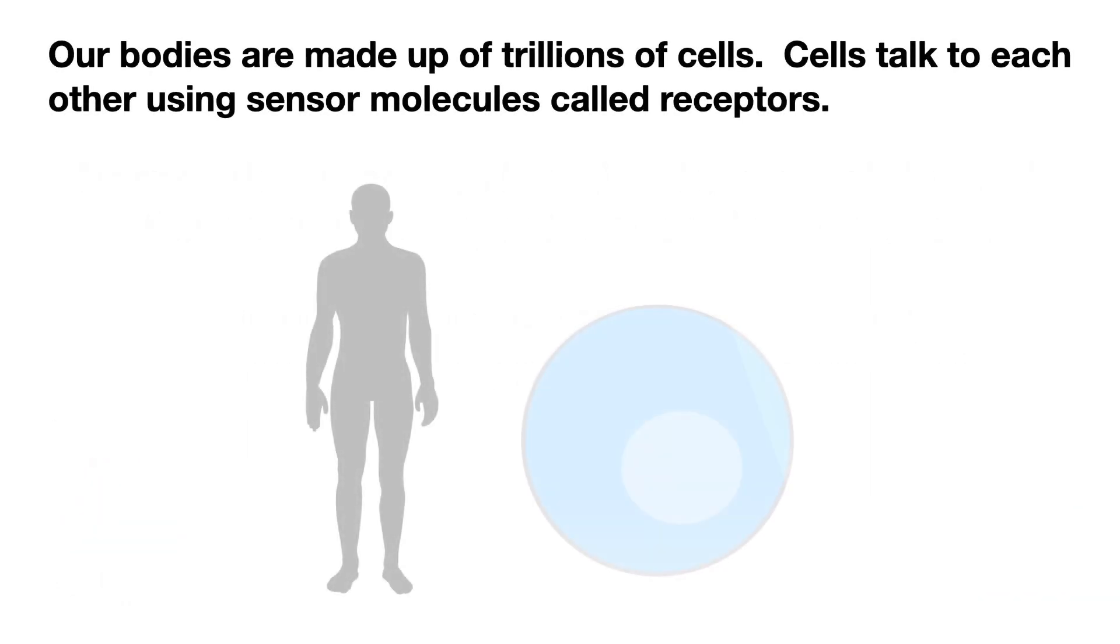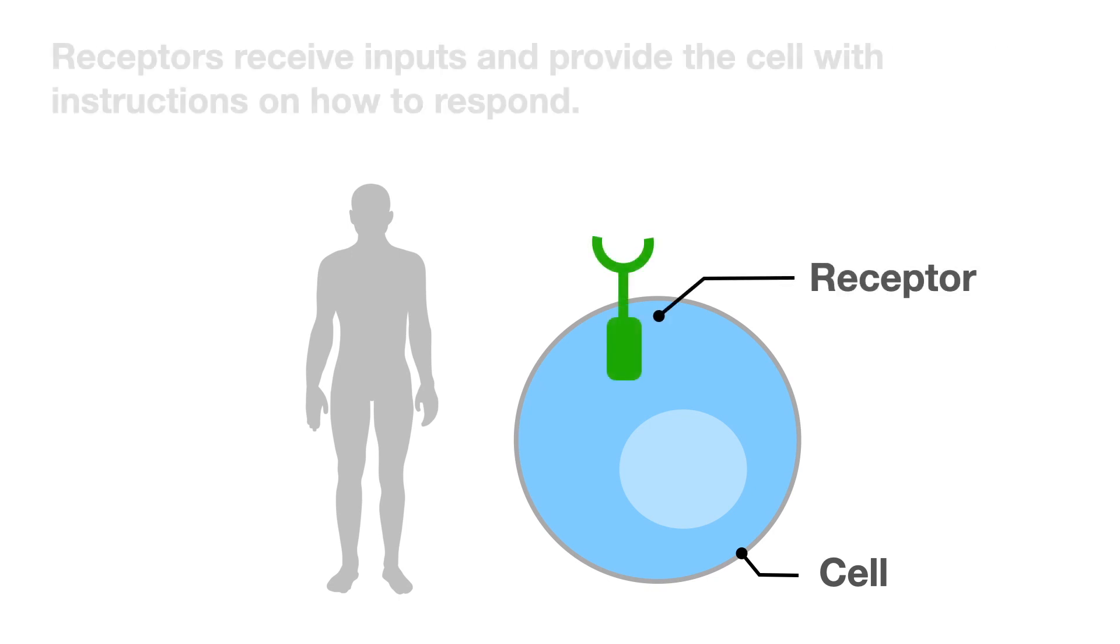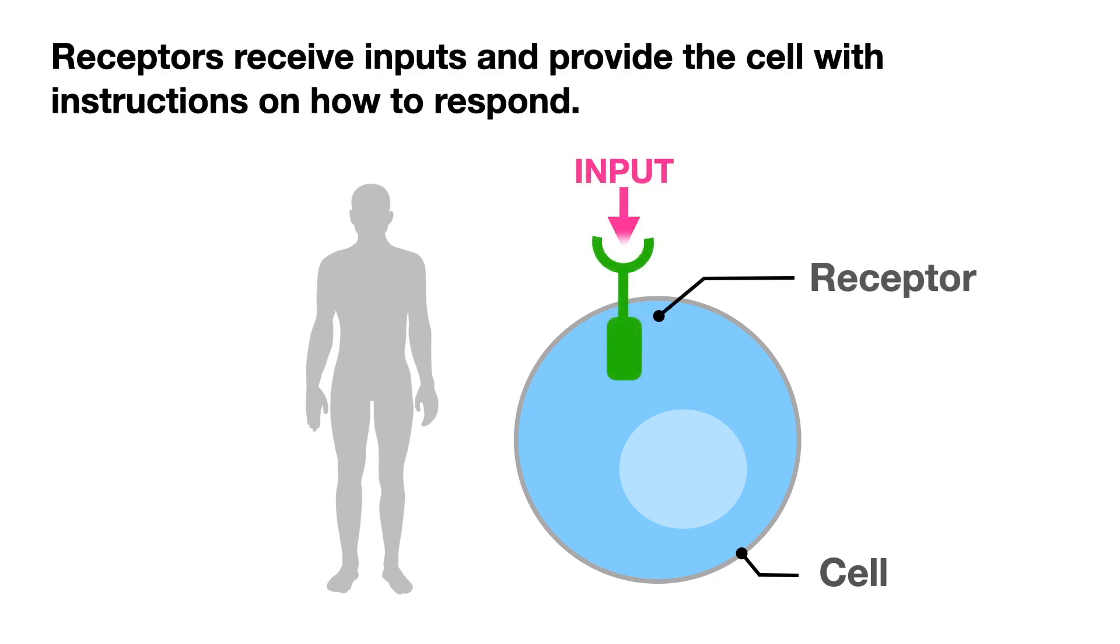Our bodies are made of trillions of cells. Cells talk to each other using sensor molecules called receptors. Receptors receive inputs and provide the cell with instructions on how to respond.